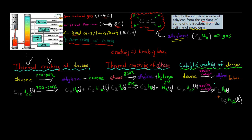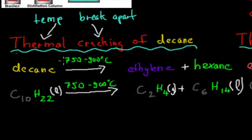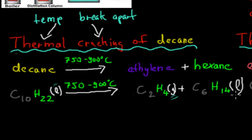Now we're going to look at the actual chemical equations. First we look at one for thermal cracking of decane. Remember thermal just meant temperature, and cracking just means breaking apart. So this was the word equation: decane, and on top of the arrow you have to put your temperature, which means it's going to crack in the presence of temperature, into ethylene and hexane. Those are your products. The chemical formula: C10H22 (liquid) turns in the presence of that temperature into C2H4 (ethylene, gas) plus C6H14 (hexane, liquid).